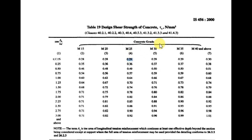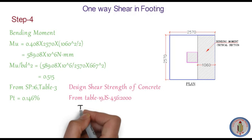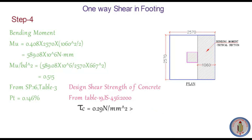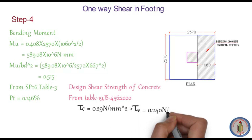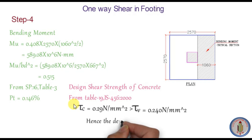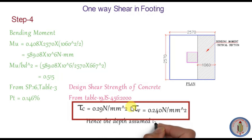Comparing the two: tau_c (design shear strength of concrete) = 0.29 N/mm² from IS 456, and tau_v (nominal shear stress) = 0.240 N/mm². Since tau_v is less than tau_c, the assumed depth satisfies the one-way shear condition. I hope you all liked this video — please comment below and don't forget to subscribe for more videos. Thank you for watching.